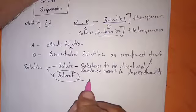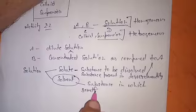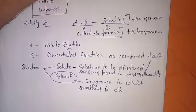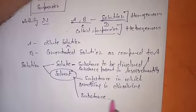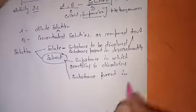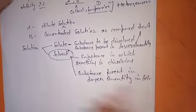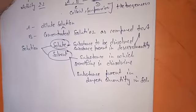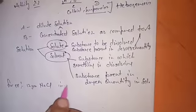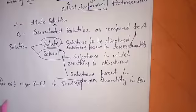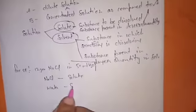Solvent is the substance in which something is dissolving, or the substance present in larger quantity in the solution. So in a solution, the component in lesser quantity is the solute and the component in larger quantity is the solvent. For example, if I dissolve 12 g of NaCl in 50 ml of H₂O, then NaCl is the solute (lesser quantity) and water is the solvent.